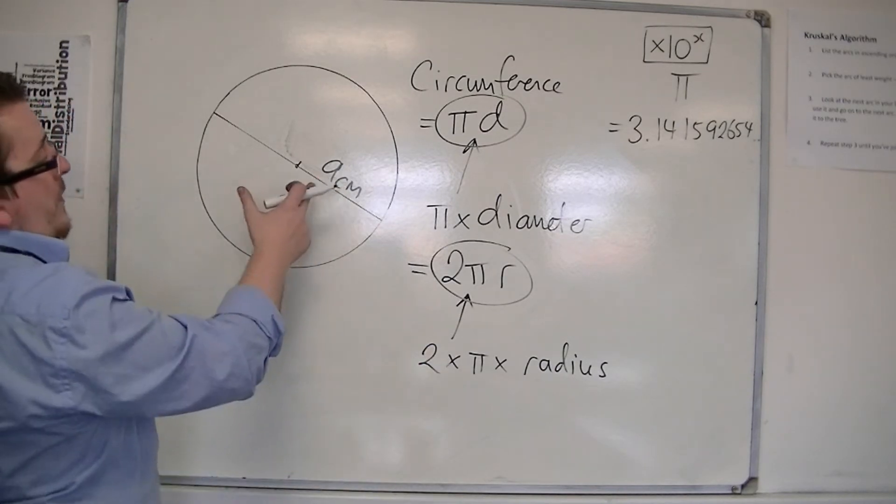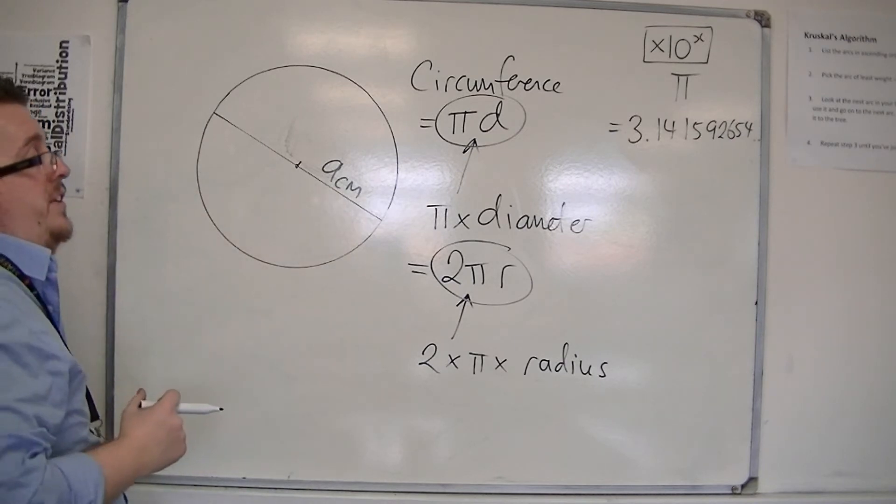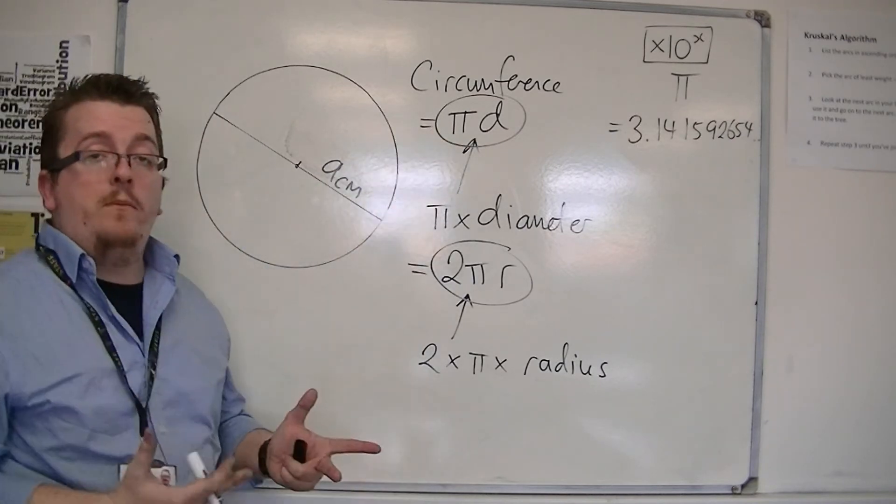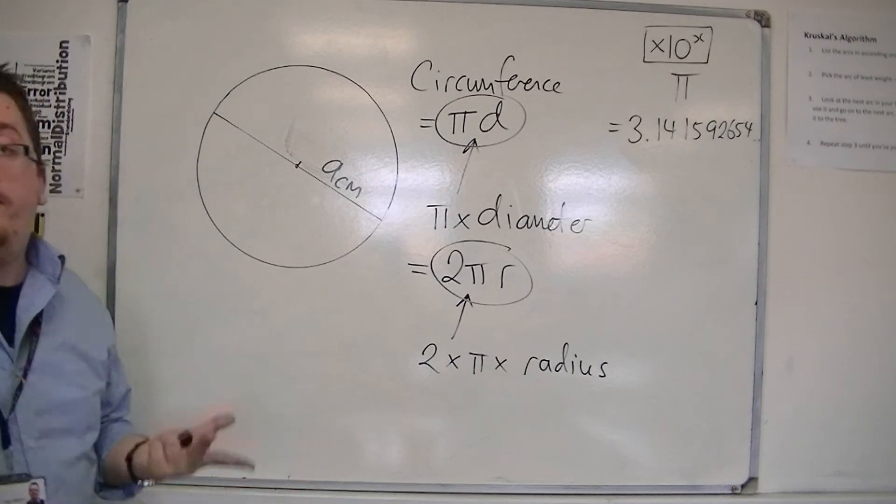Or, I could go, well, twice the radius would be 18 centimeters, and then I could use the circumference one there, pi times d. It doesn't matter.